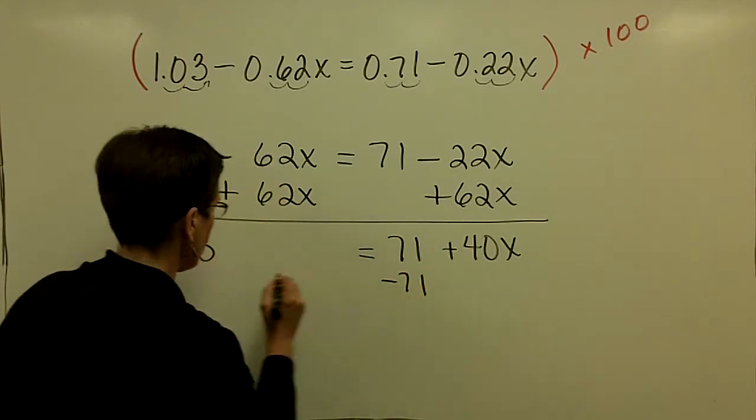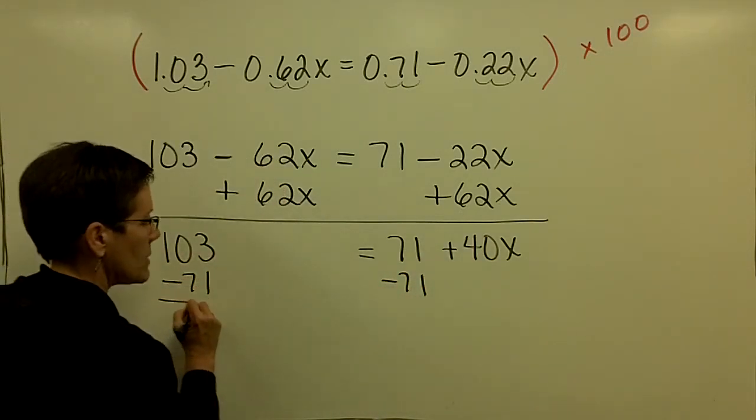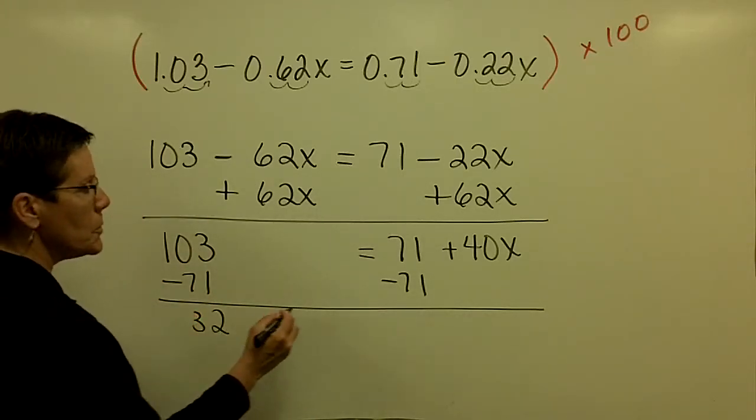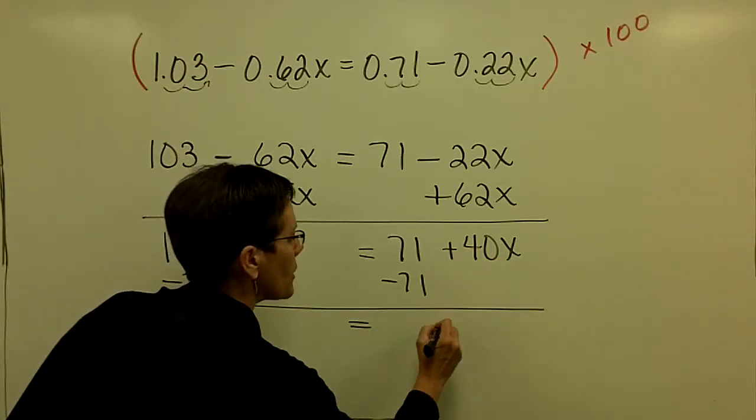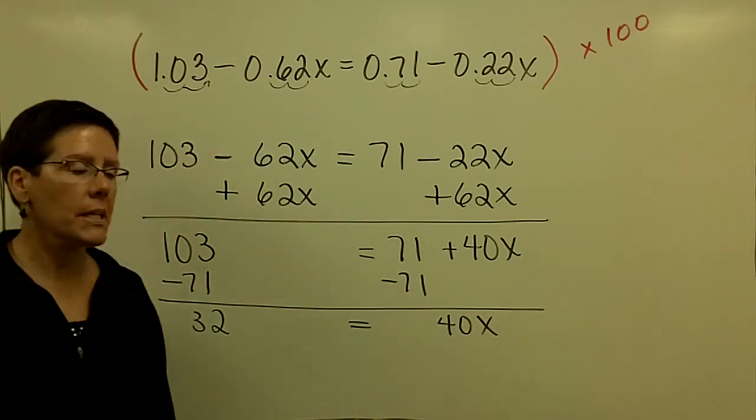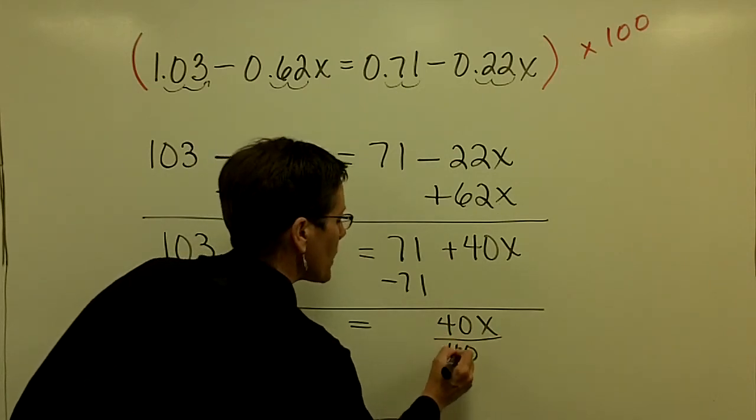So I'm going to subtract 71 from both sides of this equation. And so let's see, that would be 32 equals, and over here I'd have a 40x. And finally I use the multiplication principle, which is to divide both sides by 40.